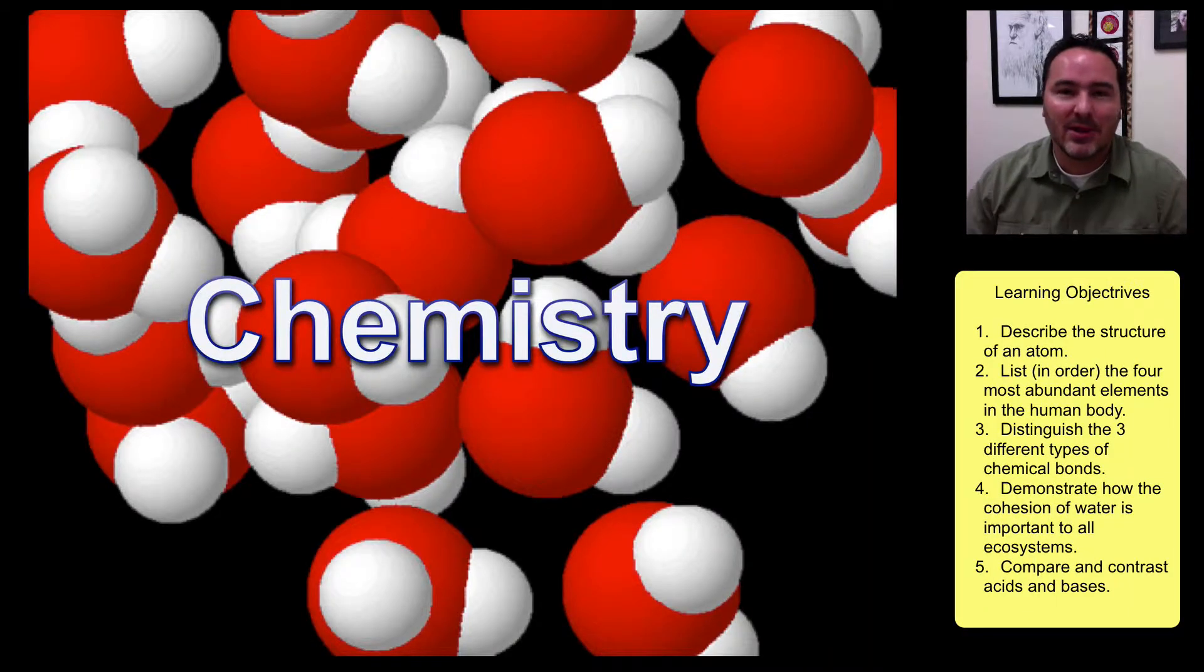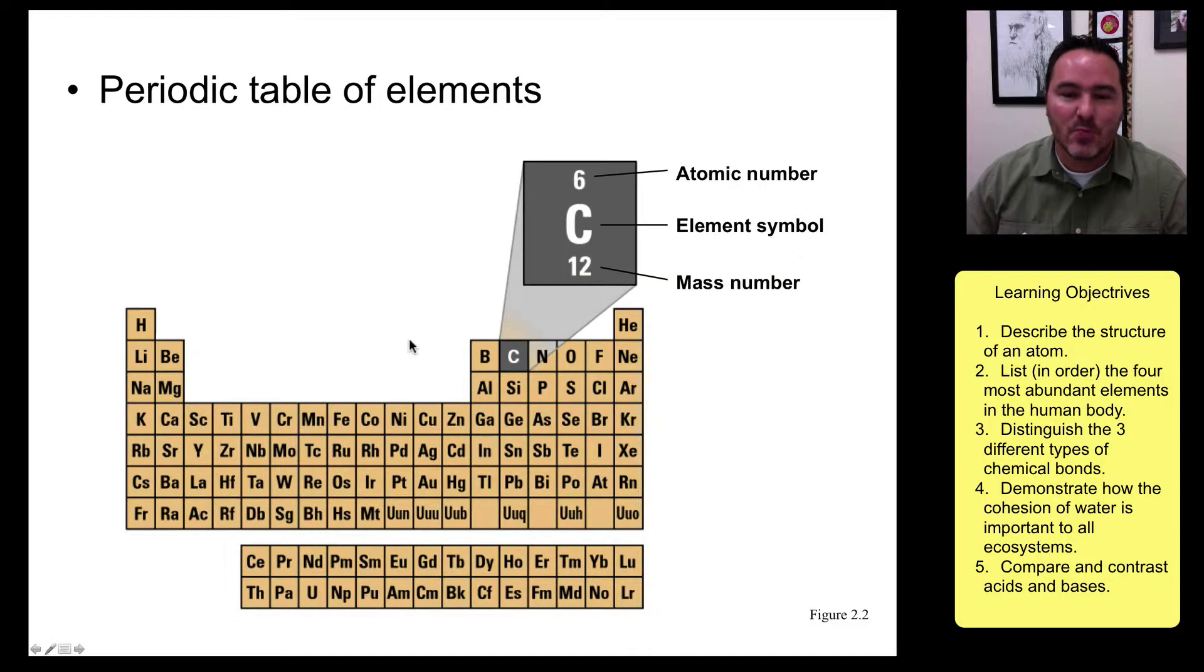Hello, Dr. Ogden. Today we're going to be looking at some of the essentials in chemistry for biology. So you might be familiar with the periodic table of elements where each of these boxes represents one element that has an element symbol, an atomic number, and a mass number.